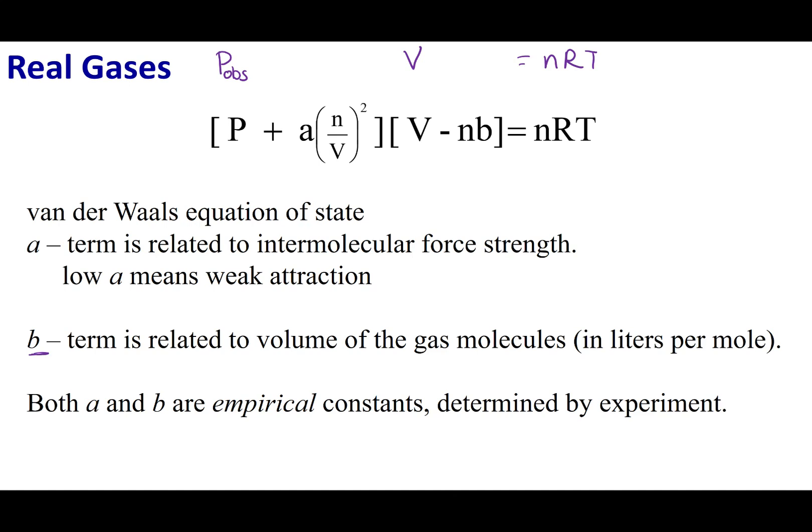The first correction term that I want to discuss is B. And this is related to volume. So remember, if I have a container and it is a liter in size, according to KMT, an ideal gas experiences that full volume. The gas particles itself, the ideal gas, do not take any volume up in that container. I'm talking about the physical molecule, the gas particles.